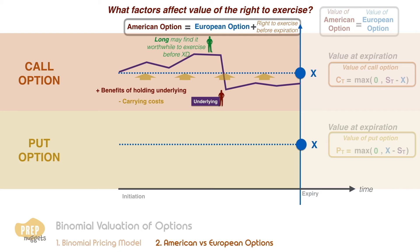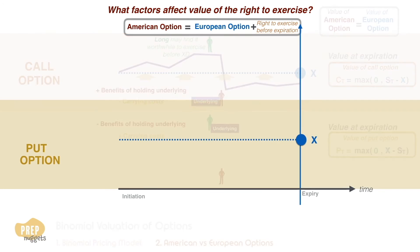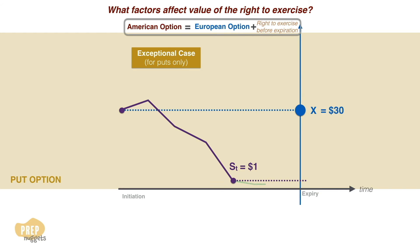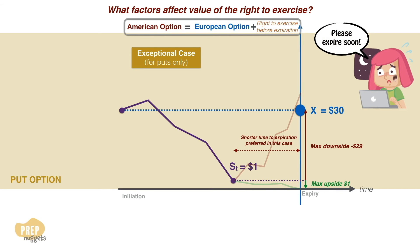The effects are reversed for the put option. As the long put is short the underlying, cash flows like dividends and interest make it more appealing to hold onto the option, having a negative effect on the value of the right to exercise early. Carrying costs, on the other hand, have a positive effect on this value. Additionally, there is a scenario specific to put options: if the underlying falls to just one dollar, the maximum upside is only one dollar for a put option with a 30-dollar exercise price, but the maximum downside is losing the entire 29 dollars in-the-money. A European long put holder would wish to exercise as quickly as possible, while an American put option can be exercised immediately, placing a premium on the American put.